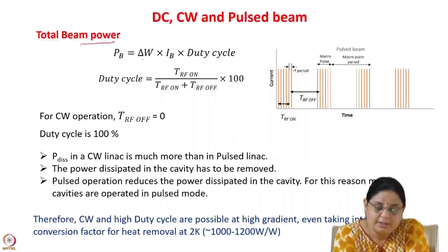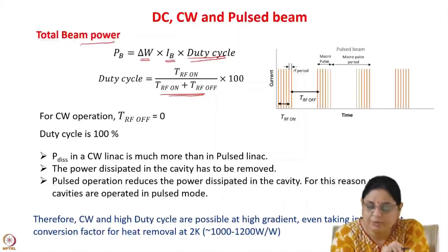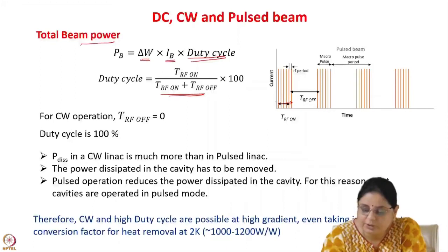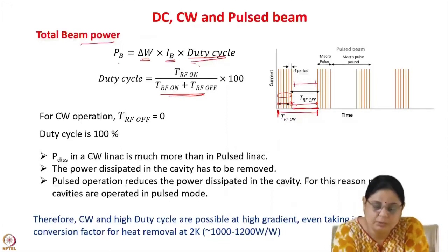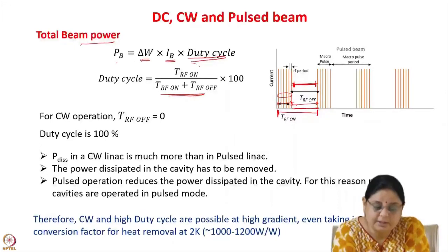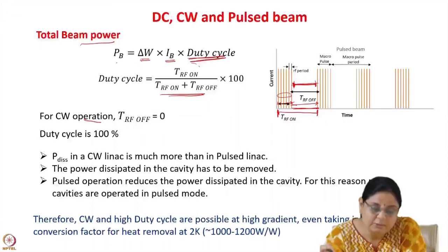The total beam power is given as P_beam = ΔW × I_B × duty cycle, where ΔW is the energy gain and I_B is the beam current. The duty cycle is defined as the ratio of time for which the RF is on to the total RF period. Since there is no beam during RF-off time, the total beam power is reduced by the duty cycle. For CW operation, the RF is on at all times (duty cycle = 1), so there is a beam at all times. For pulsed operation, the RF is off for part of the time.